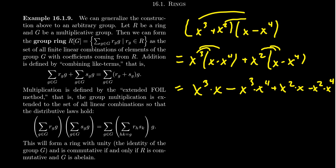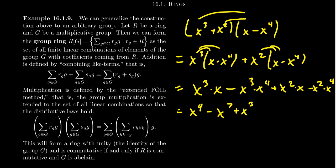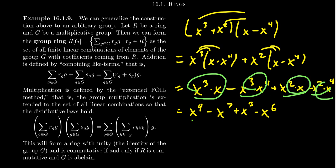By the usual rule, when you multiply powers of x, you add the exponents together. So x cubed times x gives x to the fourth, x cubed times x to the fourth gives x to the seventh, x squared times x gives x cubed, and x squared times x to the fourth gives x to the sixth. Then combine like terms if possible. For each of these monomials, we add together the powers: 3+1=4, 3+4=7, 2+1=3, and 2+4=6.